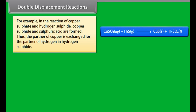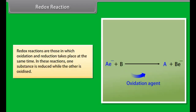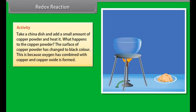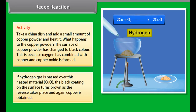In this reaction, iron metal displaces copper from the solution of copper sulfate. Take copper sulfate solution in a test tube, place an iron nail in it, and keep it for some time. The blue color of the solution fades and red-colored copper metal is displaced. The reaction is: Fe + CuSO₄ → FeSO₄ + Cu. Other examples: 2Na + 2H₂O → 2NaOH + H₂; 2Al + Fe₂O₃ → Al₂O₃ + 2Fe.